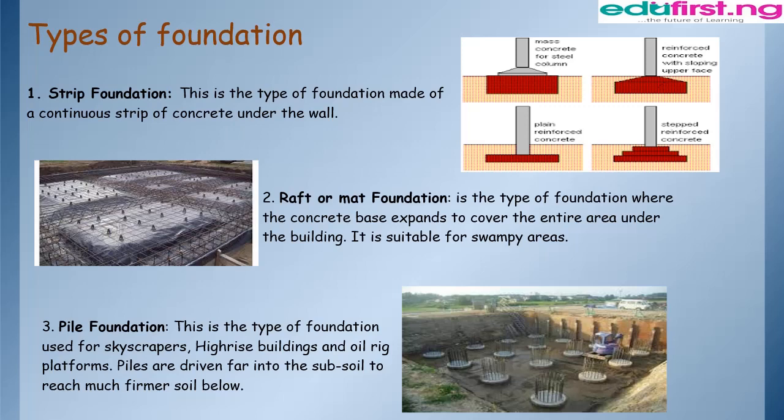From there we move to types of foundation. For this class we'll be looking at just a few of the types. Let's start with number one: strip foundation. This is a type of foundation made of continuous strips of concrete under the wall, and there are different types or methods of constructing a strip foundation — the diagram shows four.